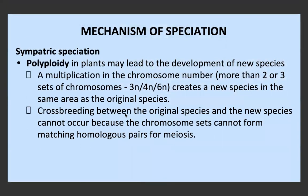In plants, polyploidy can lead to the development of new species. Polyploidy is when there's a multiplication in the chromosome number — not just one extra chromosome, but a whole extra set. Humans have a diploid number of chromosomes, that's 2n, but when plants are polyploid they'll actually have 3n, 4n, or 5n sets of chromosomes. For 3n it becomes triploid, 4n is tetraploid, and so on — but the general name for it is polyploid.